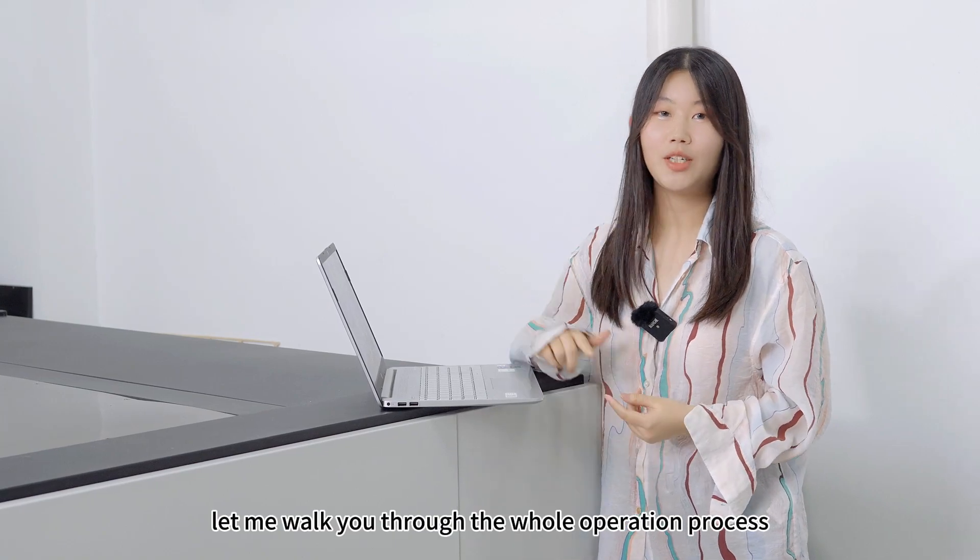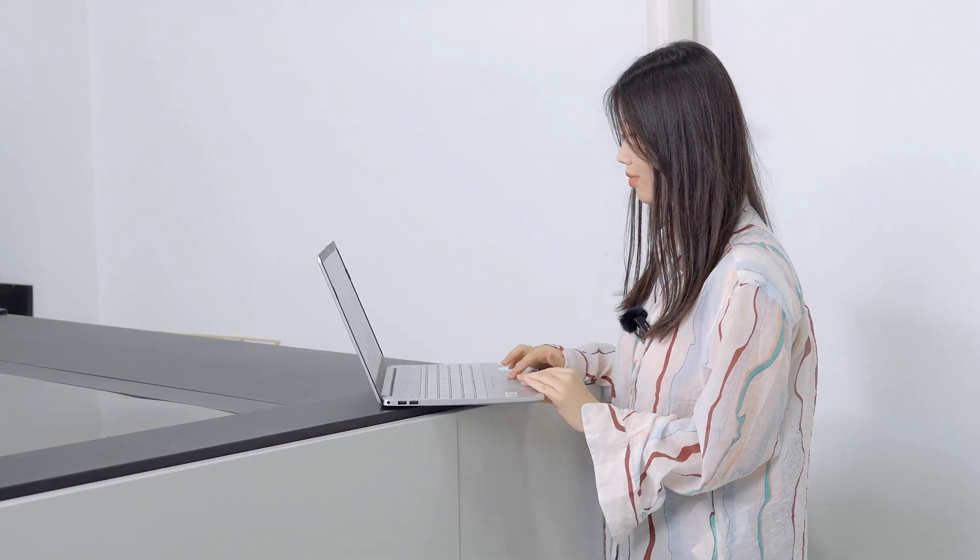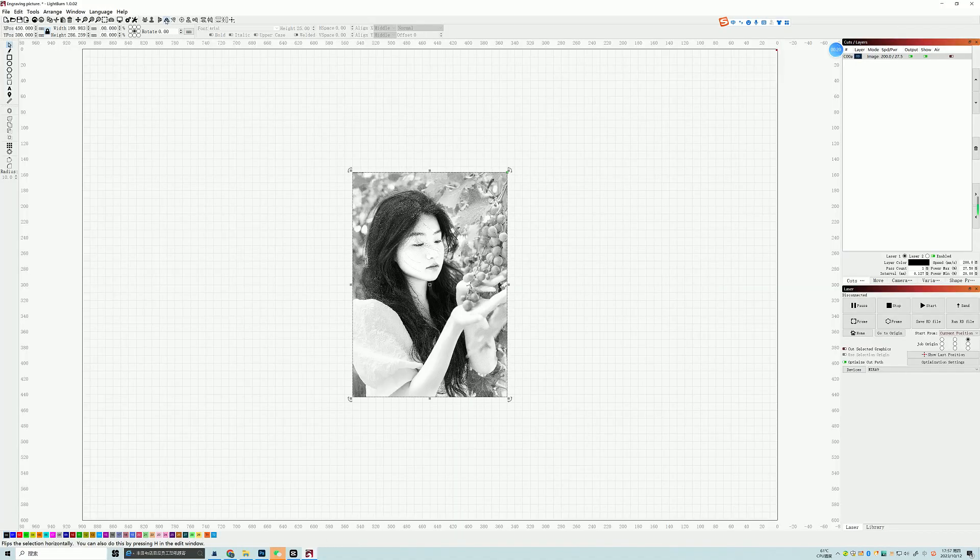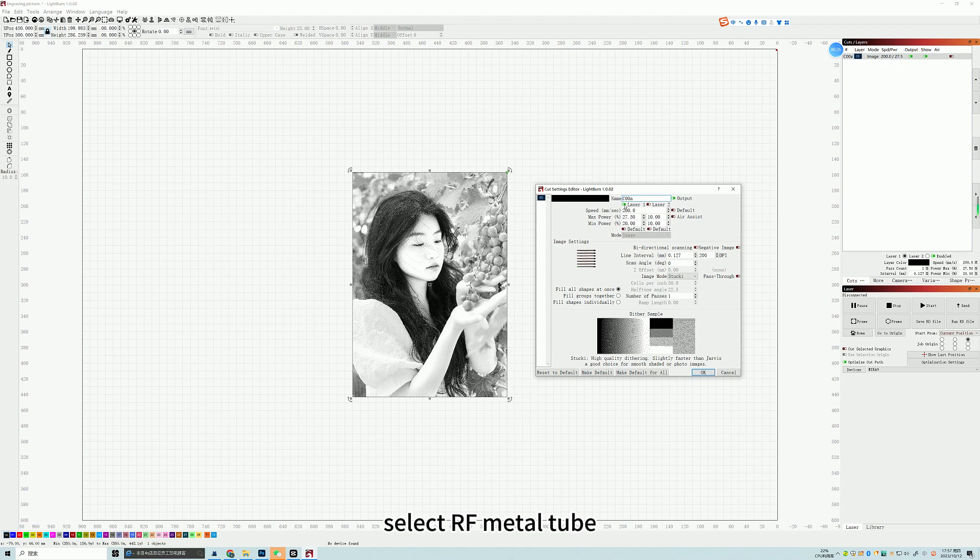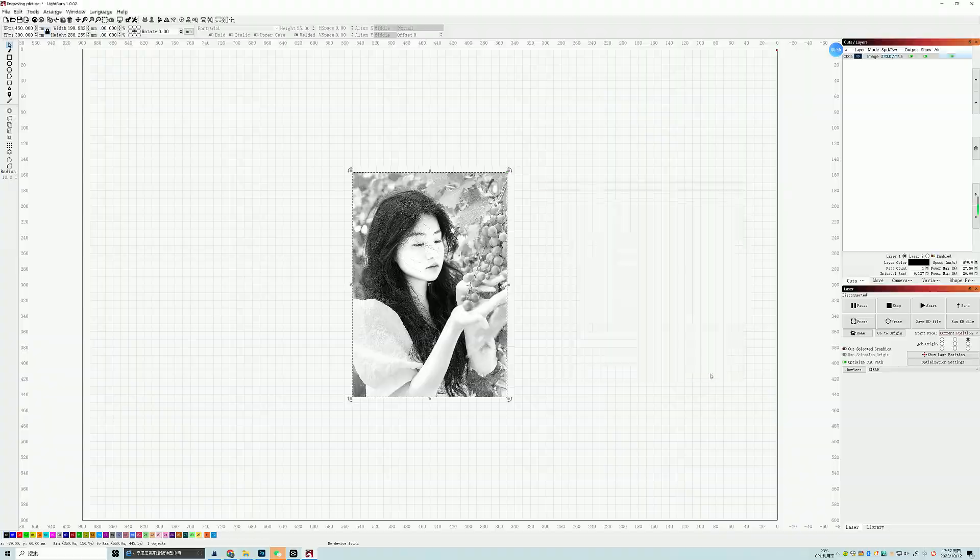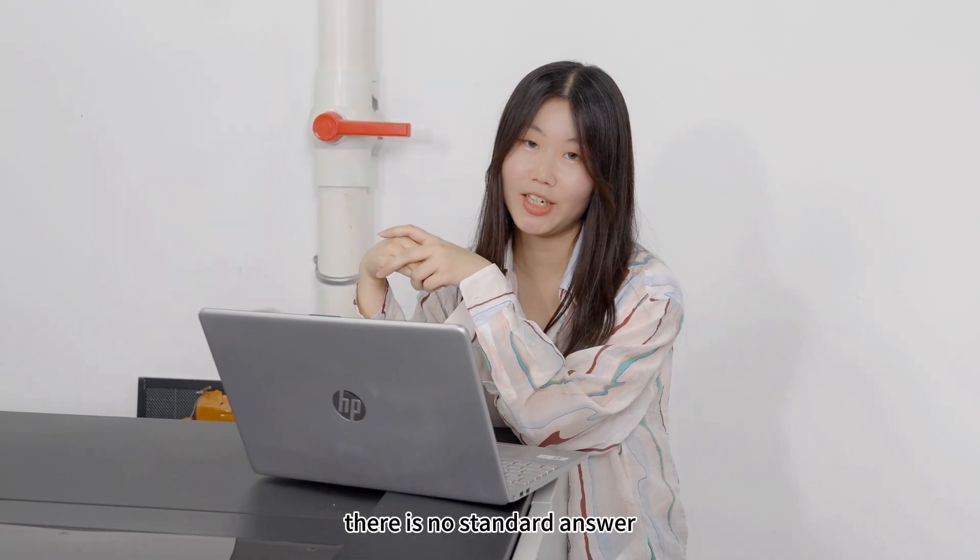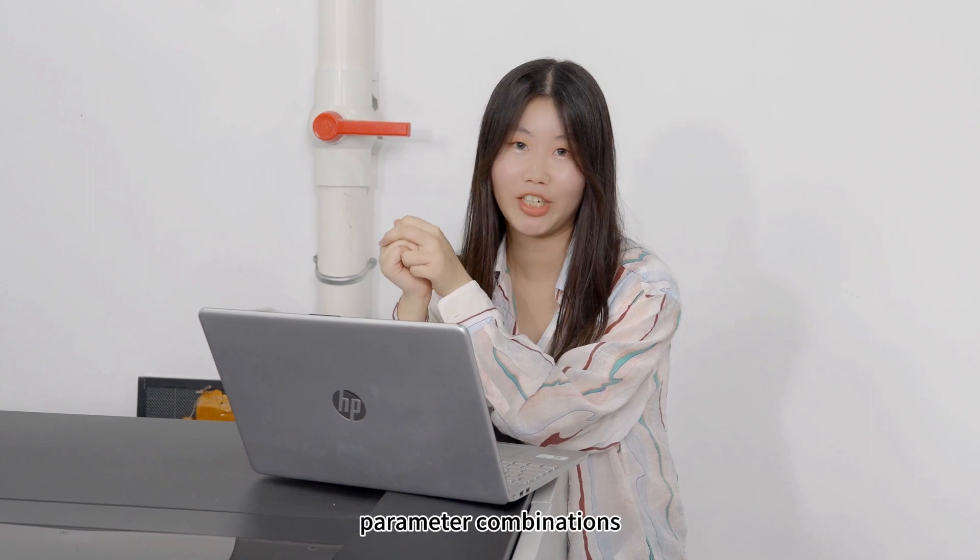Let me walk you through the whole operation process. Open the picture in Lightburn. Make a mirror symmetric. Select RF metal tube. Set the speed and power. Enable bidirectional scanning. Negative mode. And set the resolution. Choose Jarvis algorithm. Of course I think in artistic creation there is no standard answer, and you might discover even better parameter combinations.